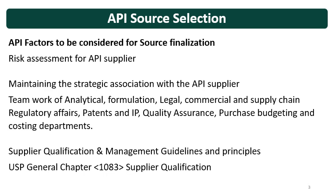There are some guidelines for API source selection, or you can call it supplier qualification. Supplier qualification and management guidelines and principles can be utilized for API source selection. The USP chapter for supplier qualification is Chapter 1083, and these principles can be seen and utilized.